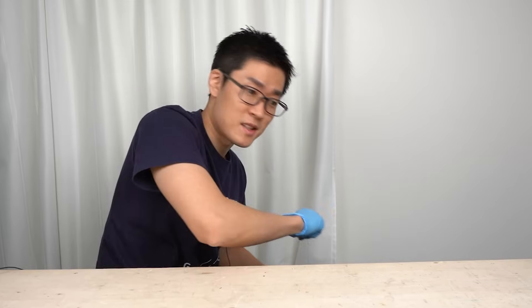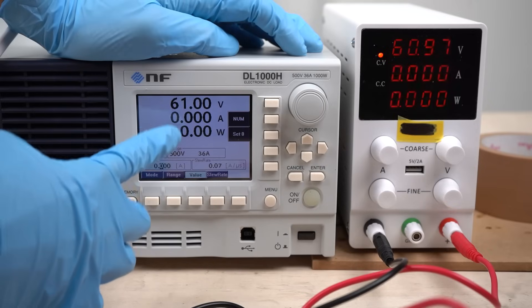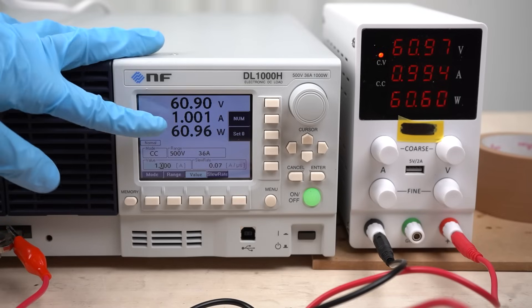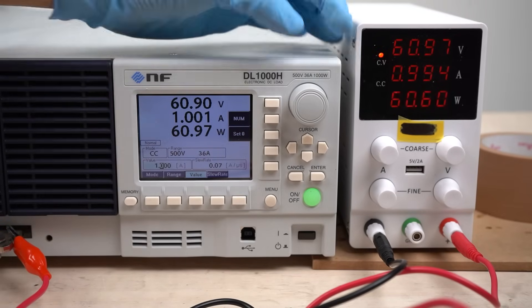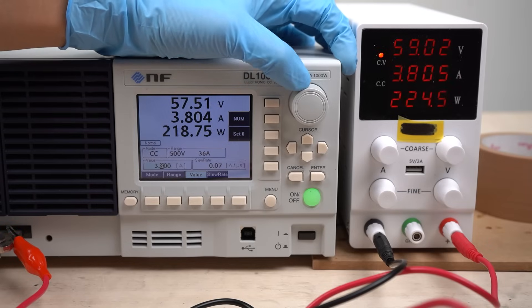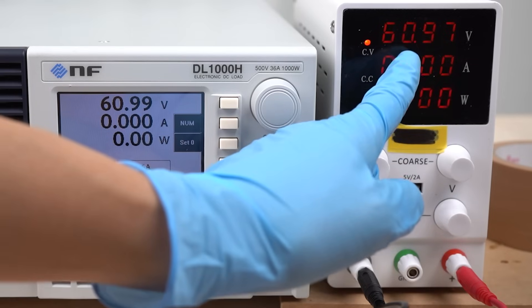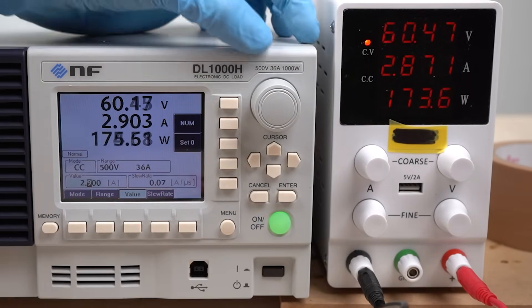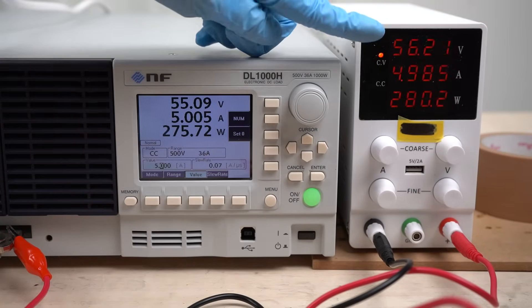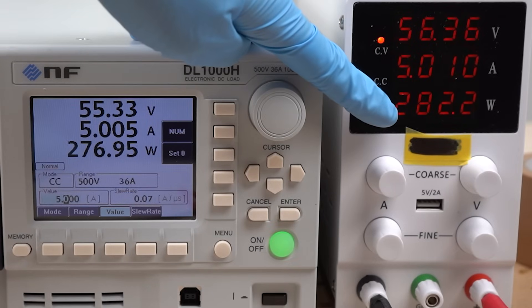I'll check if it can really output 300 watts. I will use this electronic load. Let's gradually increase the flowing current. Currently, one amp is flowing and the power consumption is 60 watts. I will increase the current further. I'll increase it to four amps all at once. A current of four amps is flowing now, but the power supply is experiencing a slight voltage drop. When no load is applied, the voltage is 61 volts. But when a current starts to flow, the voltage drops quite a bit. Now, a rated current of five amps is flowing. The output voltage of the power supply has dropped to 56 volts. It means the output power is only about 280 watts.